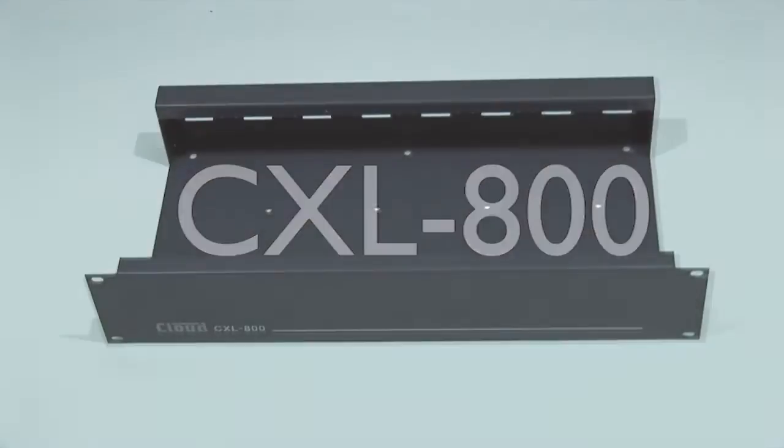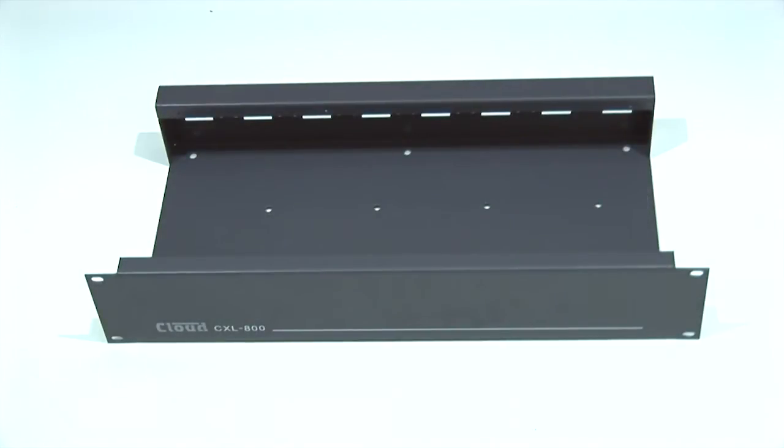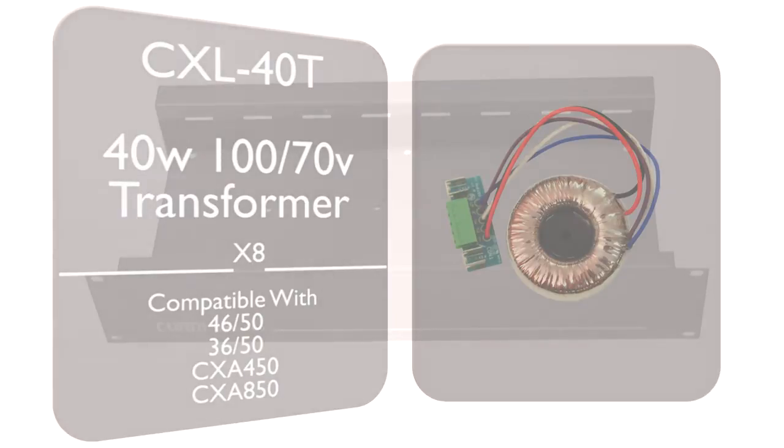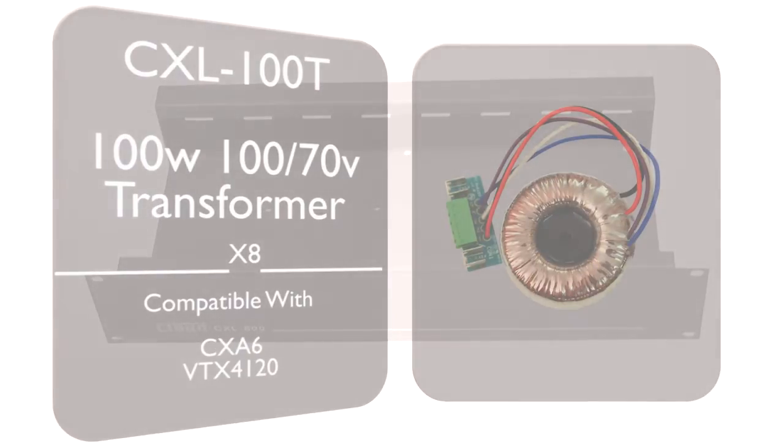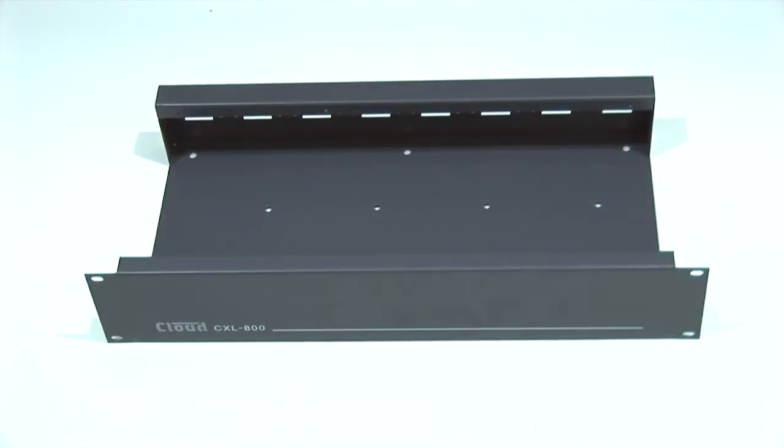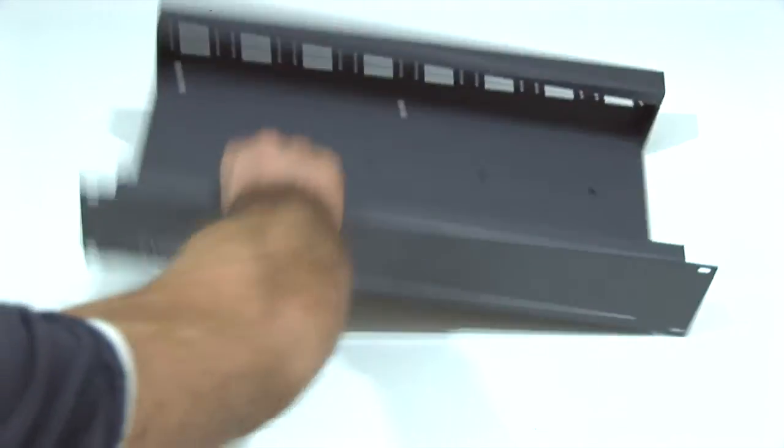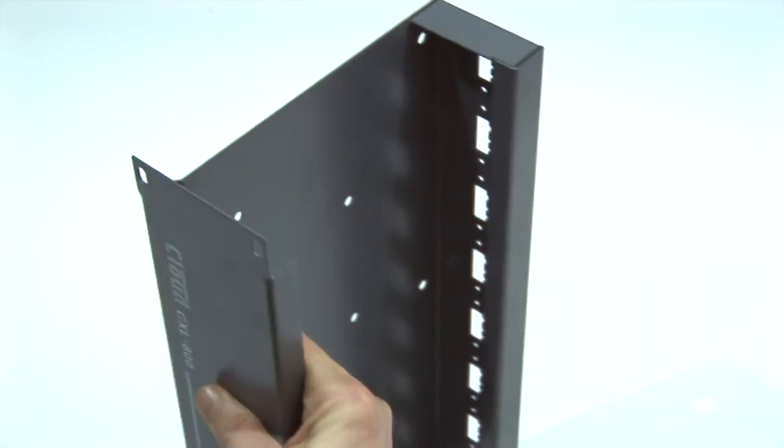The CXL800 provides secure housing and connection for the cloud range of external high impedance toroidal transformers. Up to 8 CXL40Ts or 8 CXL100Ts can be installed, allowing easy conversion to high impedance output for many of the cloud range of low impedance amplifiers.